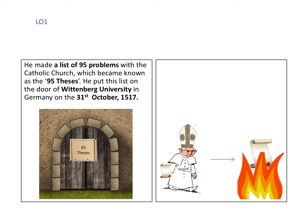Martin Luther compiled all of these problems into a list that became known as the 95 Theses. He nailed these to the door of Wittenberg University on the 31st of October 1517. This was him going public with his grievances — saying out in public that these are the things which are wrong with the Catholic Church. This was a very dangerous thing to do at the time because the Catholic Church had huge amounts of power.